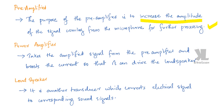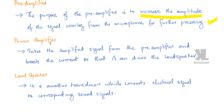The next block is the power amplifier. The power amplifier takes the amplified signal from the pre-amplifier and boosts the current so that it can drive the loudspeaker.